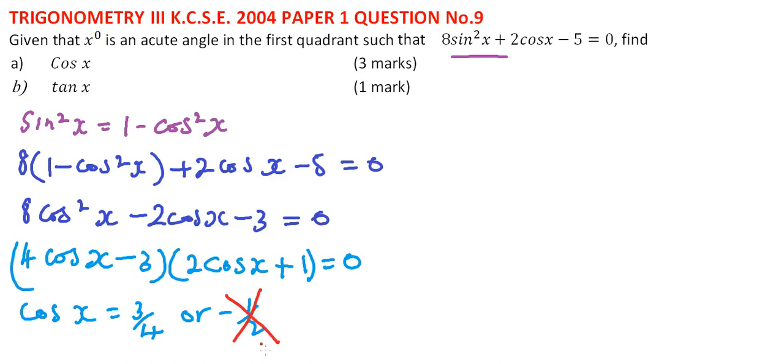Now we have cos x = 0.75. Since we know cos x is 3/4, we can use a right angle triangle. This is our angle x.